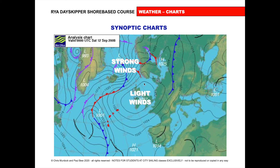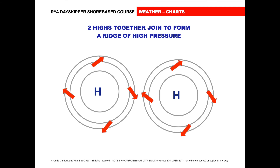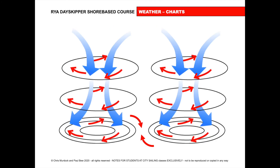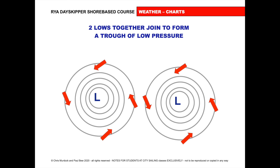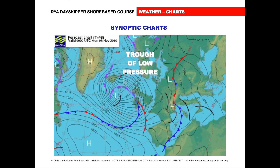So here we have with the isobars — which are these lines here, the lines of equal air pressure. You see there's a big distance between this isobar and this isobar, so there's light winds. High pressure in the middle, light winds. These isobars are closer together, so we'll get stronger winds. Two highs tend to join to form a ridge of high pressure. If two highs join together, you'll get a ridge of high pressure. And this area is called the Azores high, because we quite often get the high pressure here on the Azores. So two lows together join to form a trough of low pressure. We've got a low and a low joining to give a trough of low pressure.